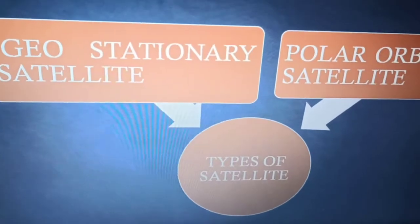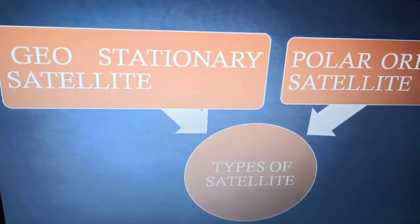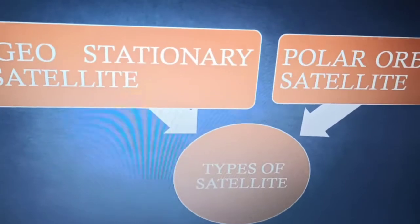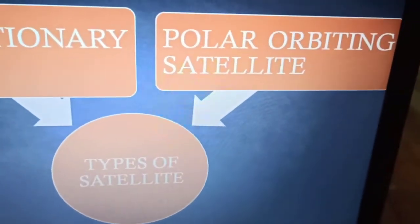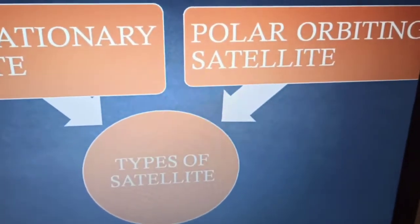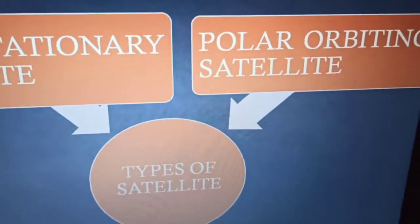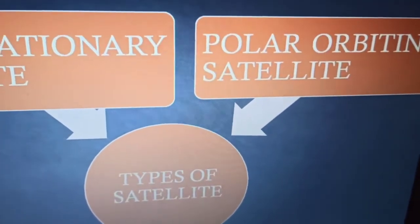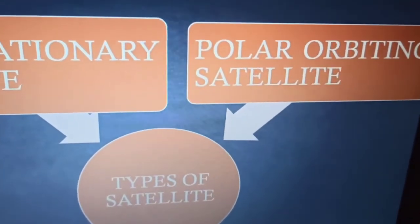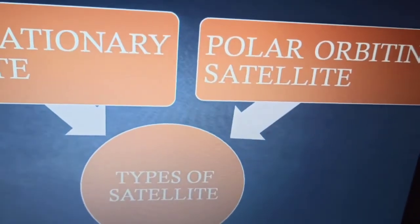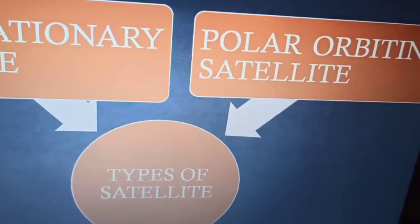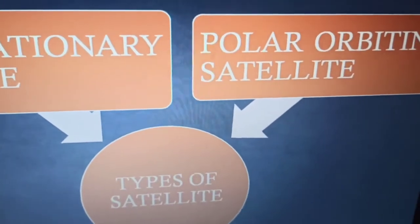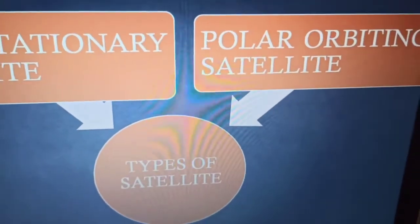Geostationary satellites are present at an elevation of approximately 22,500 kilometers above the equator. Polar orbiting satellites move in the north to south direction, present at an elevation of 800 to 900 kilometers, and they capture one strip of the earth at a time.